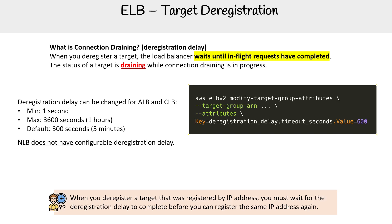The whole point of deregistration delay and connection draining is that if you have a connection and someone's doing something important, you don't want that person to get disrupted. So you want to set this based on how long you think a request would be.